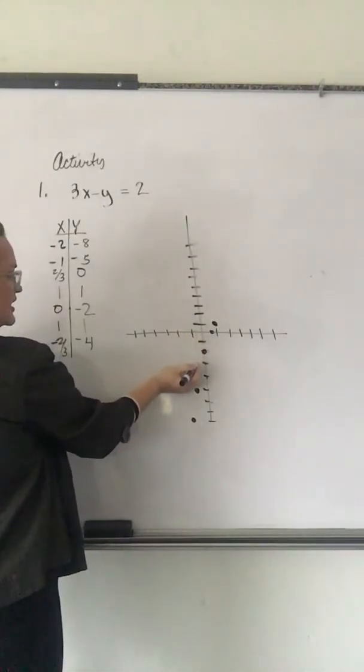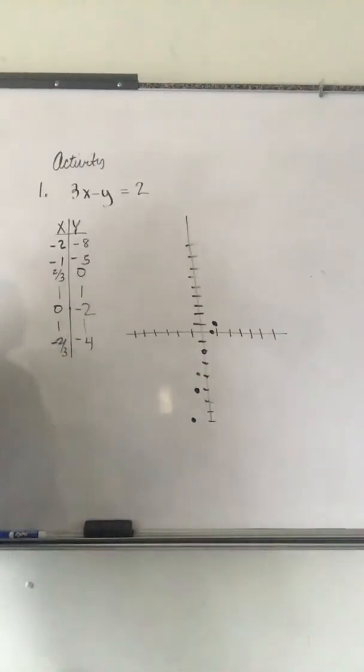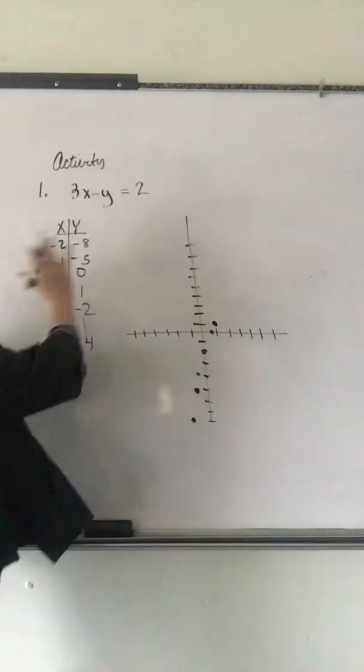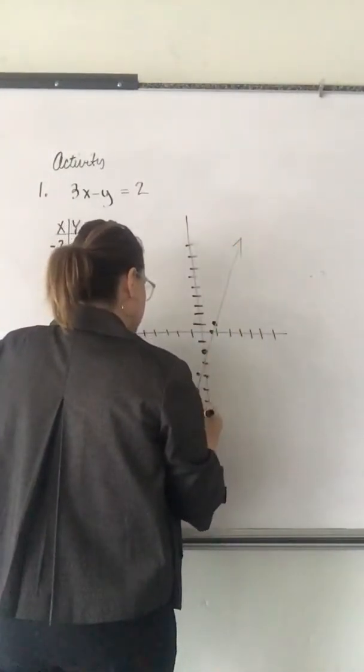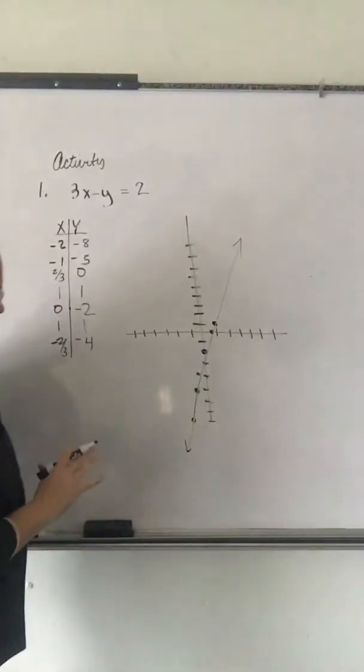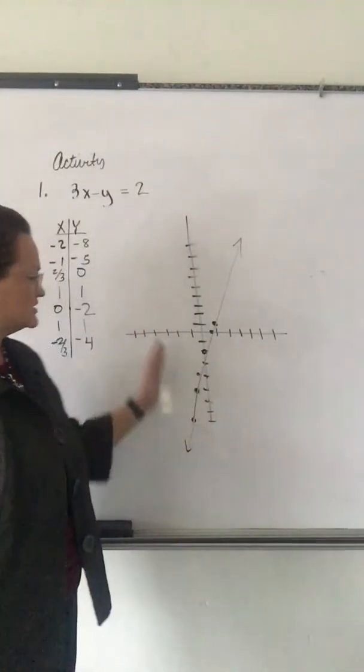And then, negative 2 thirds and negative 4. You see, that looks like it falls on that line too. So, anything that solves this equation should be connectable. Now, I've just thrown this on the board without being meticulous. So, it's not a perfectly straight line, but you can kind of tell that works, right? The solutions line up.